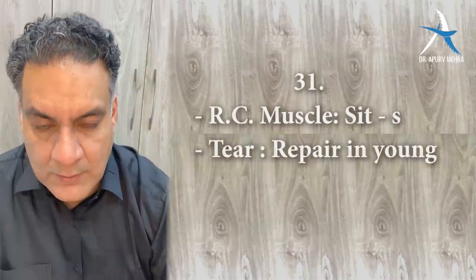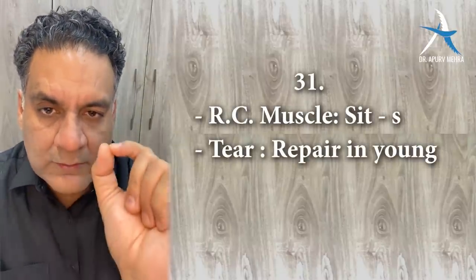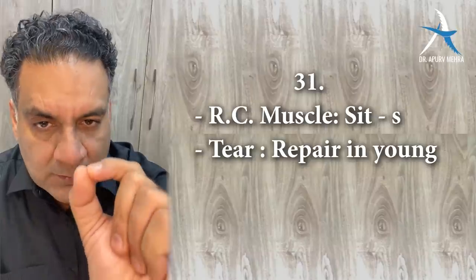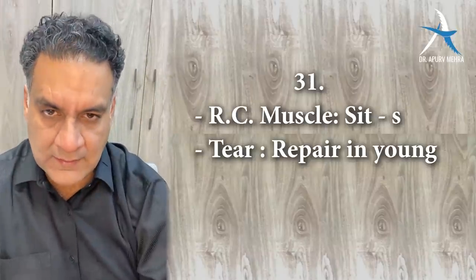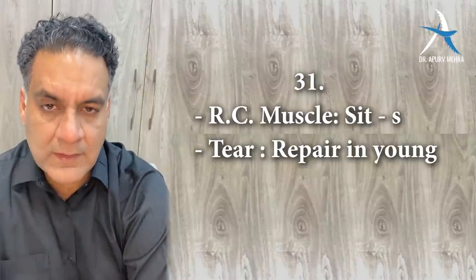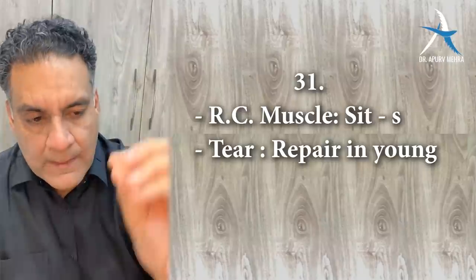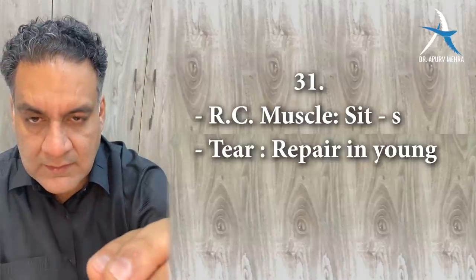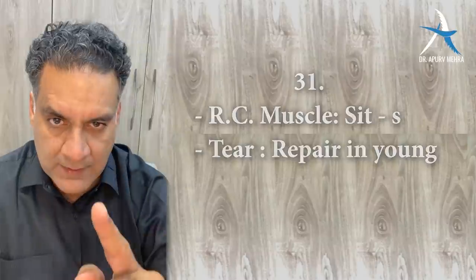Point number thirty-one: rotator cuff muscles remembered by the mnemonic SITS — Supraspinatus, Infraspinatus, Teres minor, Subscapularis. If they are torn in a young patient, you will repair it. Point number thirty-two: clavicle is the most common bone to fracture in the human body, and it fractures at the middle one-third.